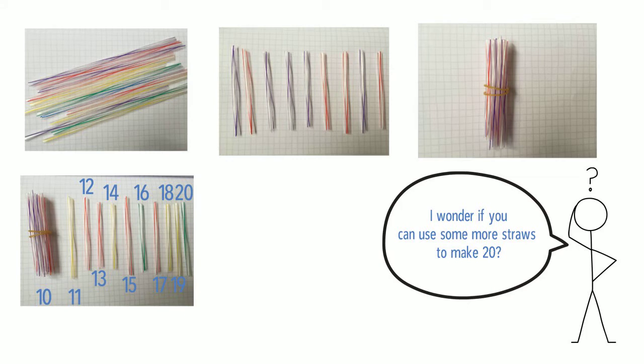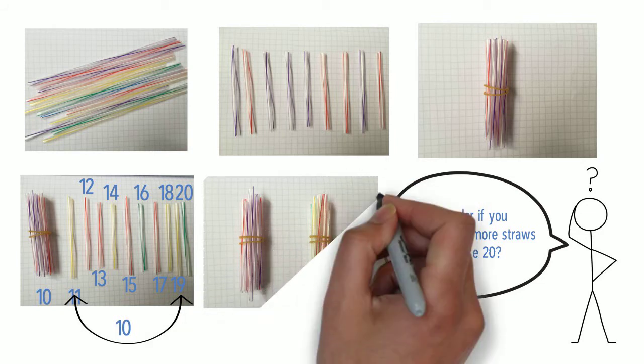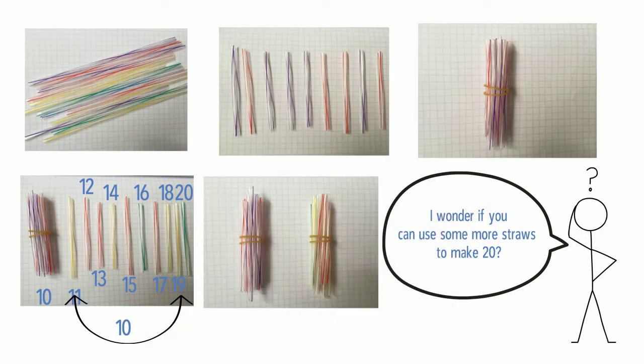And how many straws did you use? 10. So you can put an elastic band around those, and now you've got another group. You've got 20 altogether, which is 20 ones, or two groups of 10.